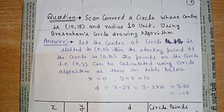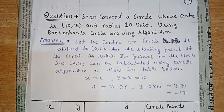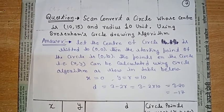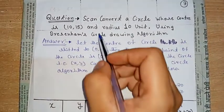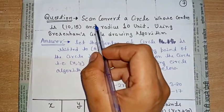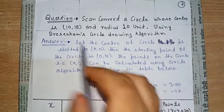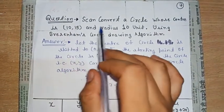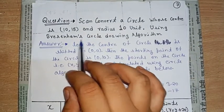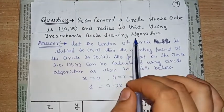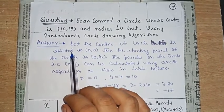Good morning students. In this lecture, we will discuss another question on the Bresenham circle drawing algorithm. The question is: convert a circle whose center is (10, 15) and radius is 10 units using the Bresenham circle drawing algorithm. Now let us start the solution.